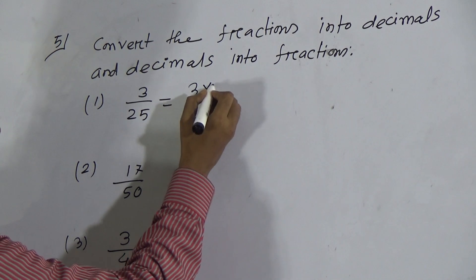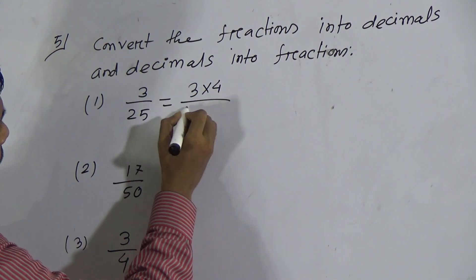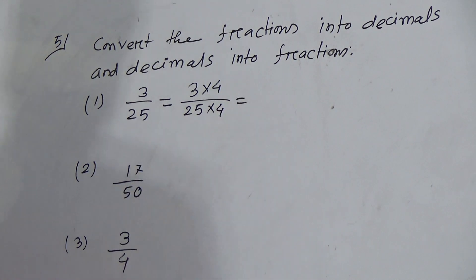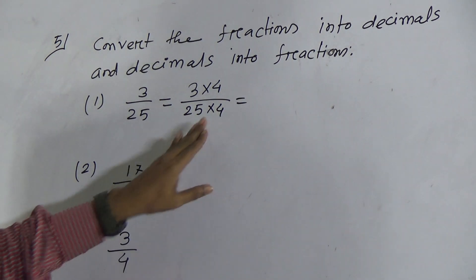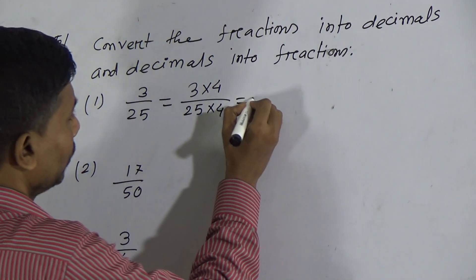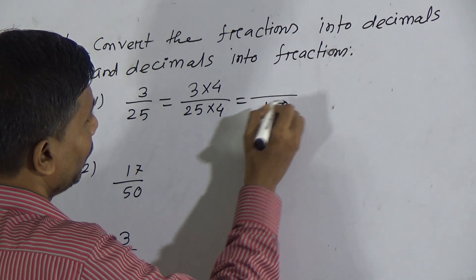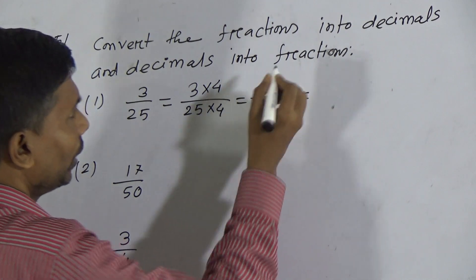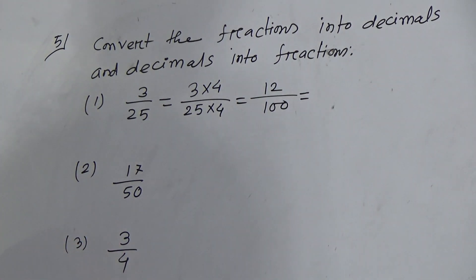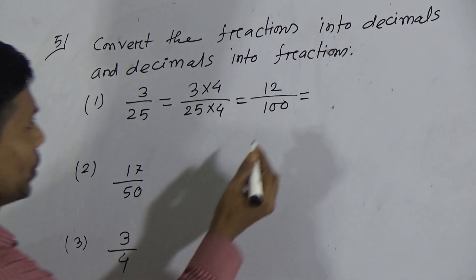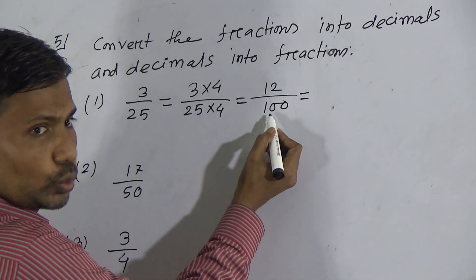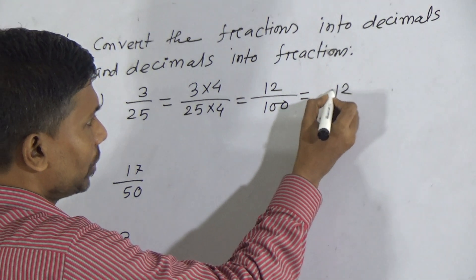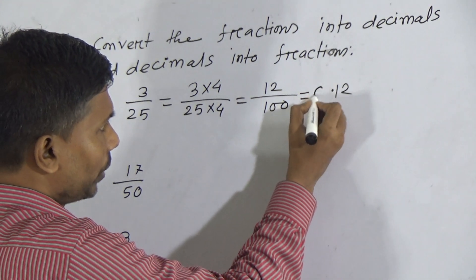Can we multiply both numerator and denominator by 4? 25 into 4 equals 100, and 3 fours are 12. Now we have to convert this into decimals. You see, 100 has two zeros, so you write 12 then place the decimal point — the result is 0.12.